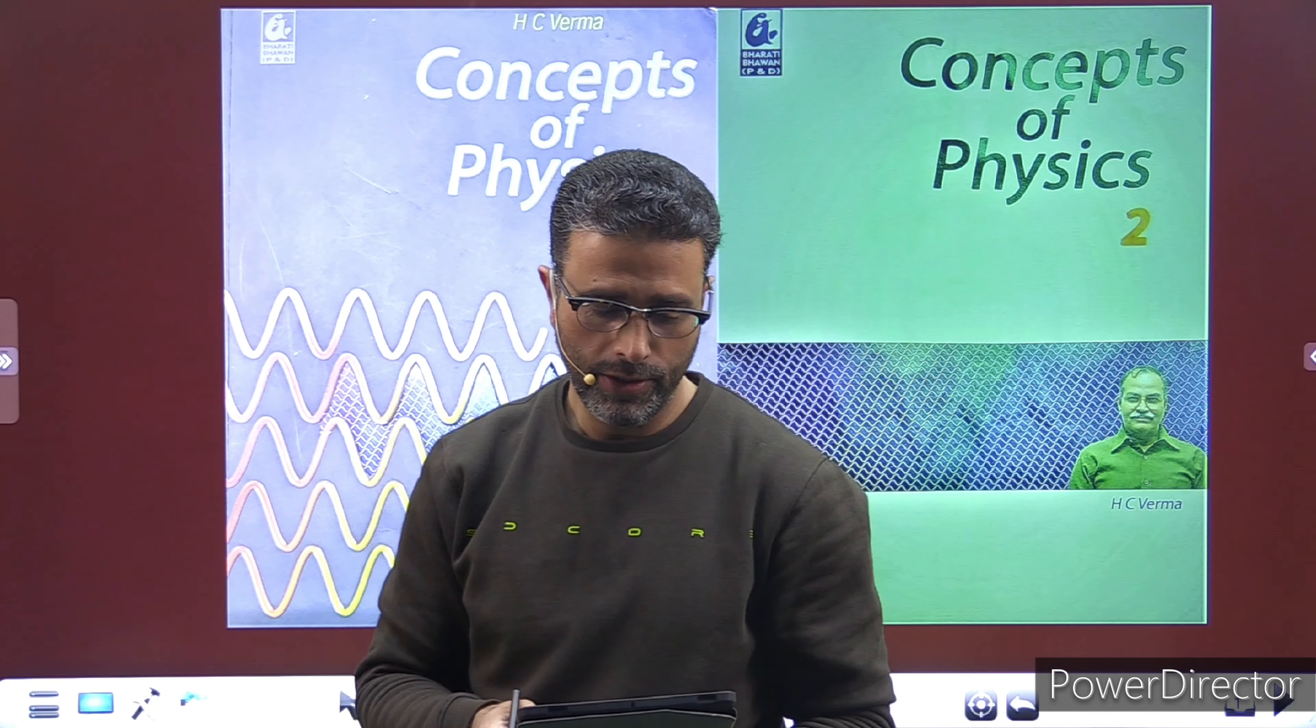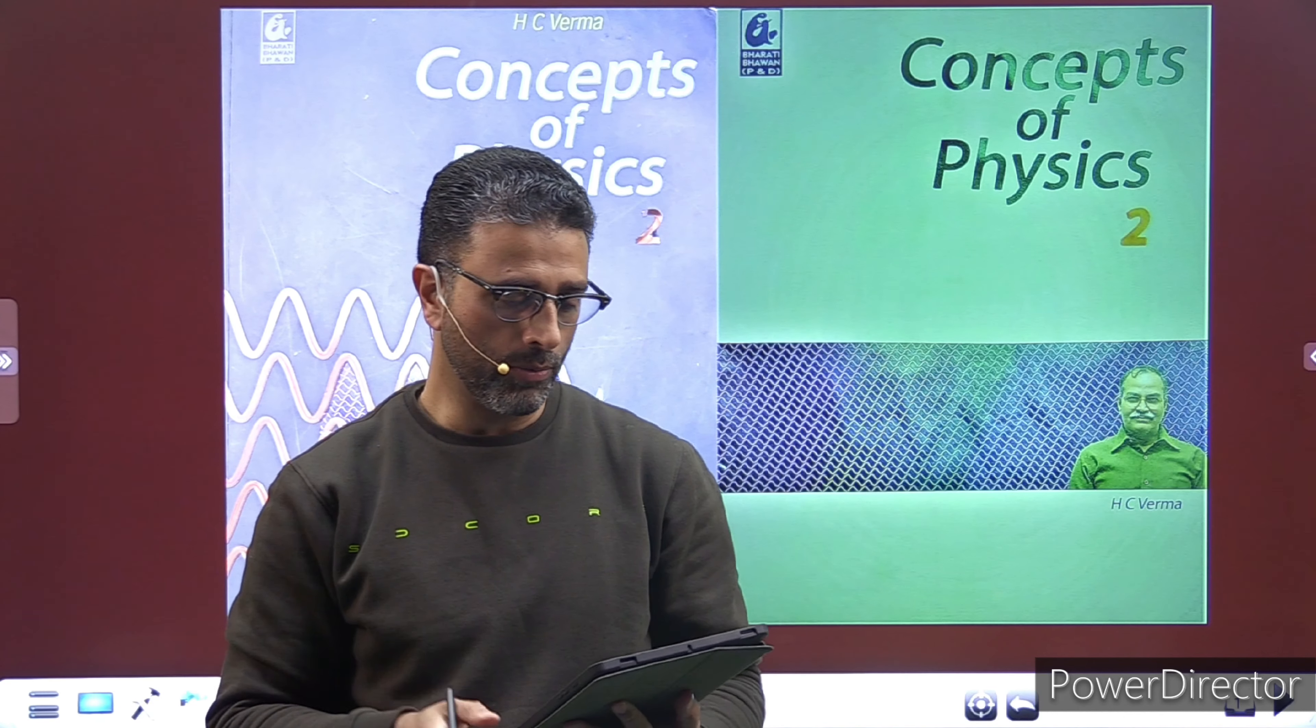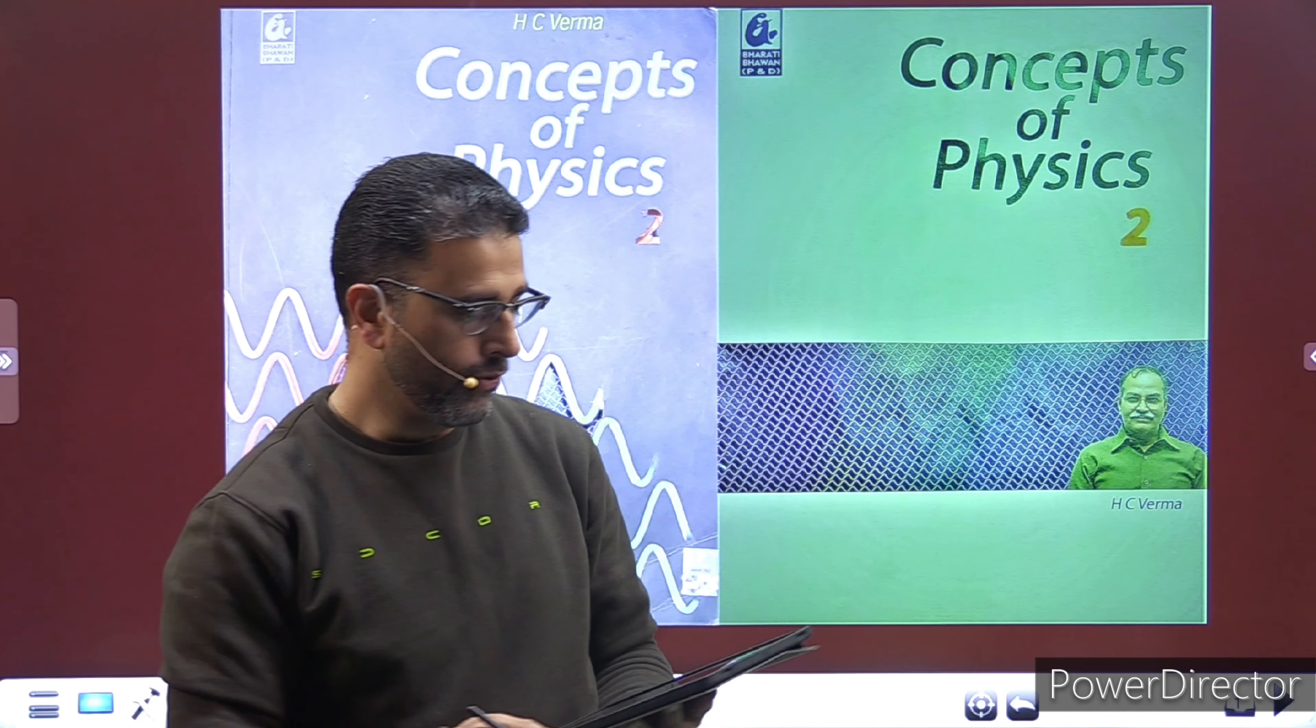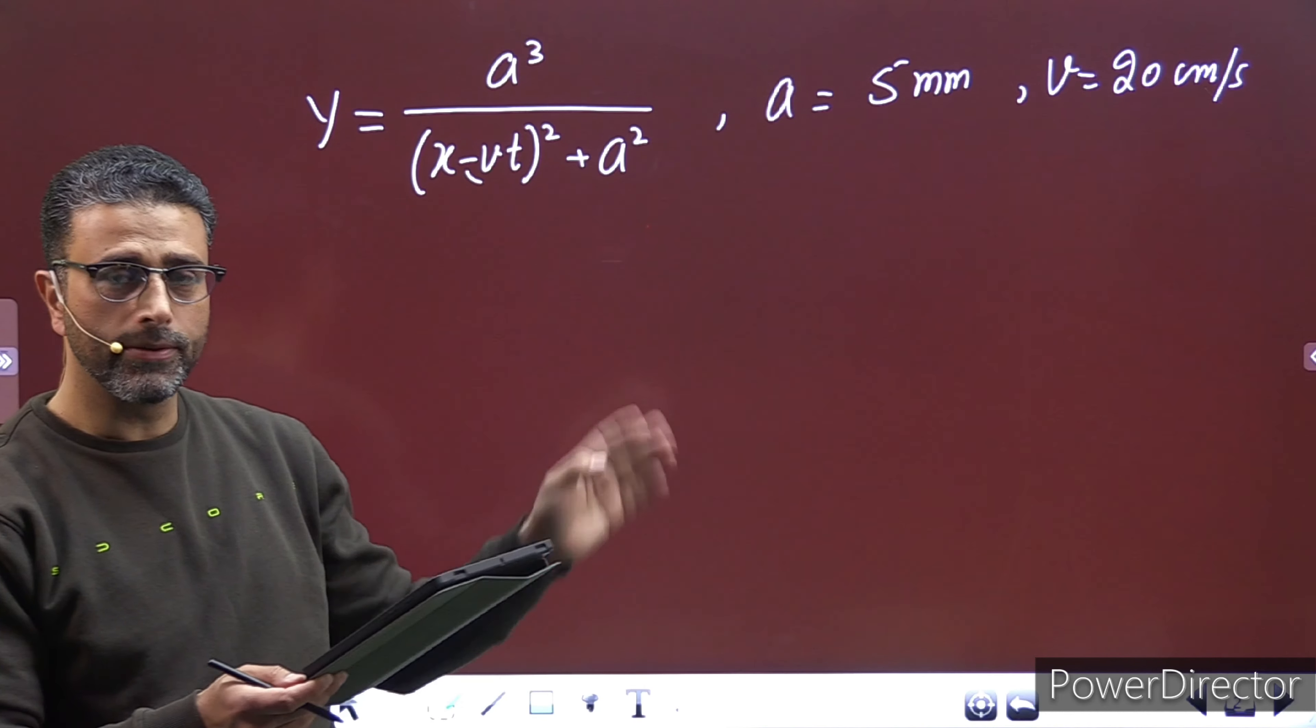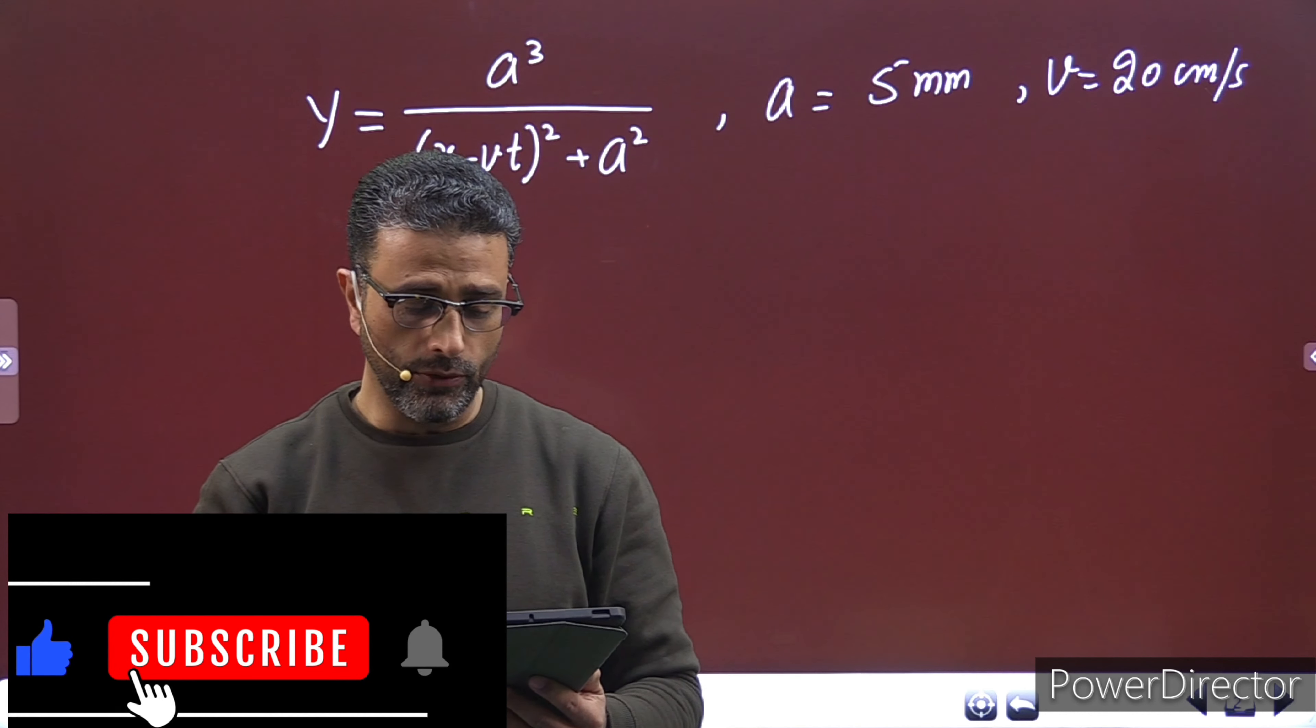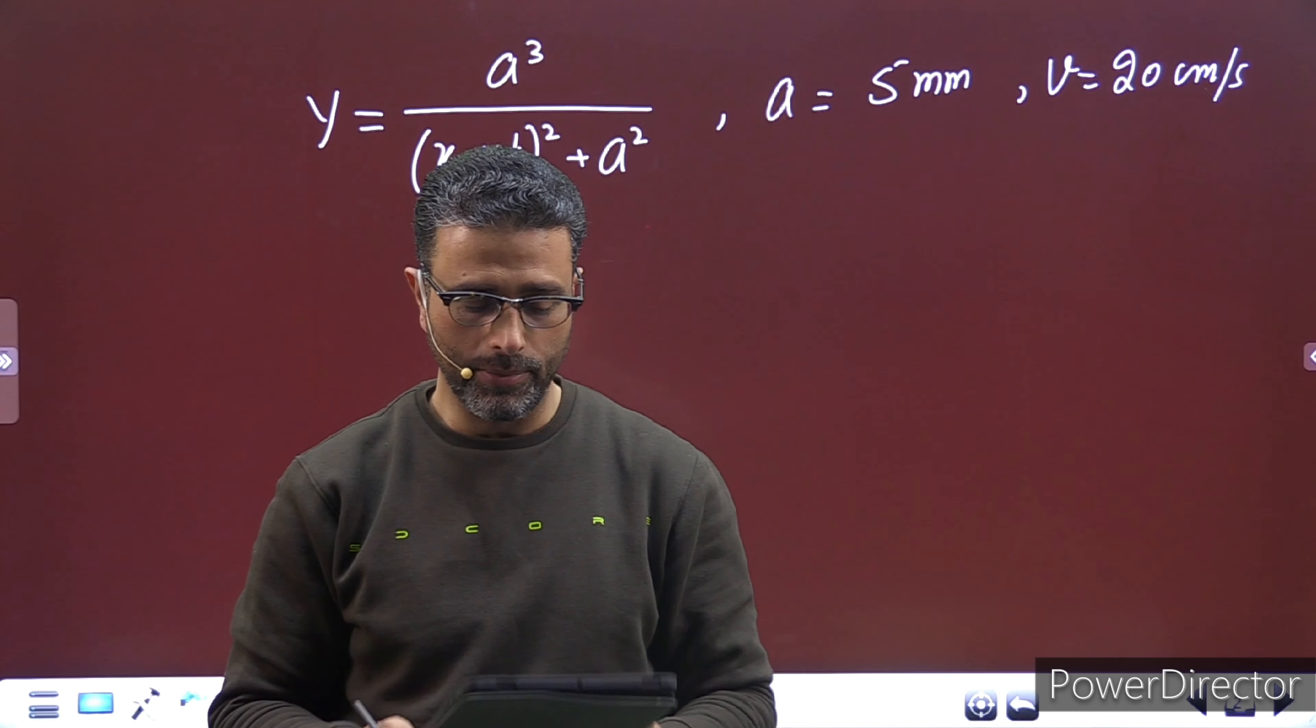Hey guys, Assalamu alaikum. H.C. Verma, chapter name Waves on a String, problem number 4. We are solving problem number 4. The problem says: A pulse traveling on a string is represented by a function y equal to a cube and blah blah blah. This is the equation. Where a is 5 millimeters, v is 20 centimeters per second. Sketch the shape of the string at t equal to 0 seconds, t equal to 1 second, t equal to 2 seconds. Take x equal to 0 in the middle of the string.